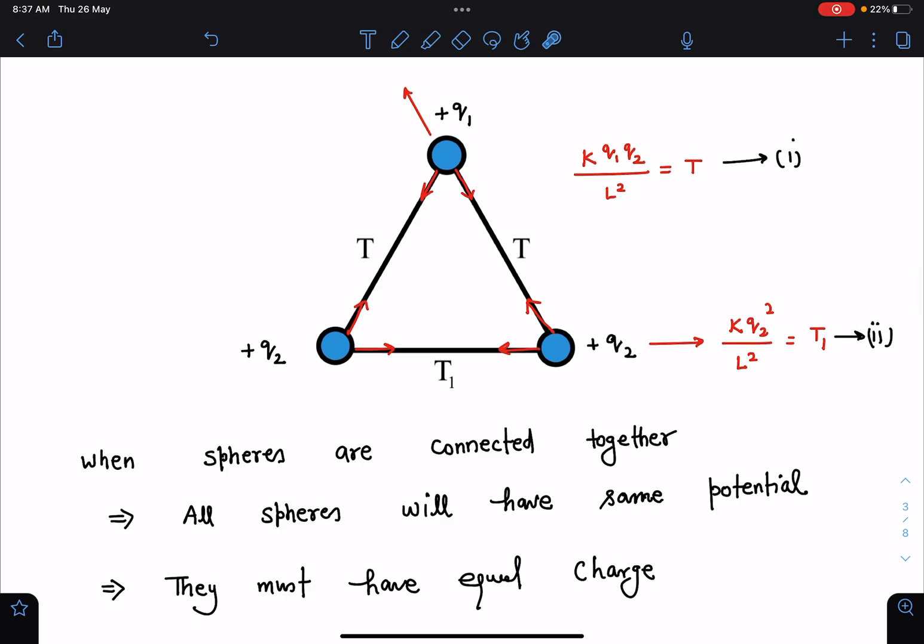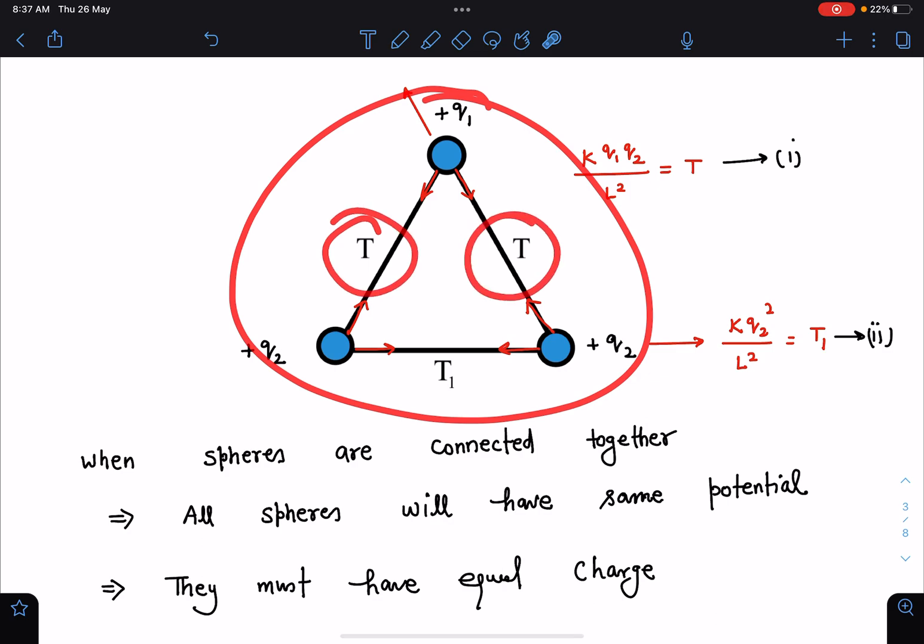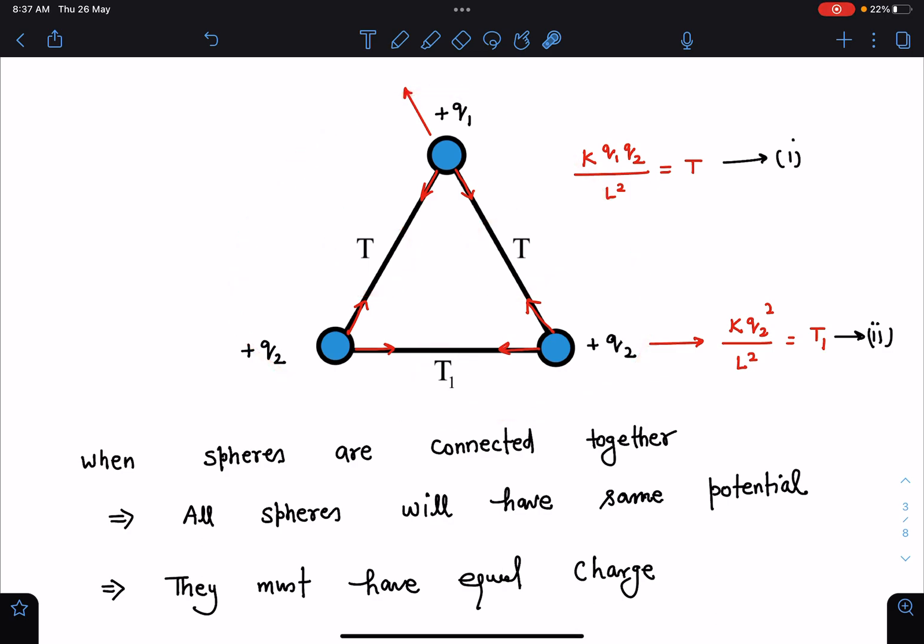Here is a situation in the beginning, it is given tension here is T, here it is T and here it is T1. From the symmetry, we can say this charge and this charge must be different, but this charge and this charge will be same, then only here and here we can have same tension.